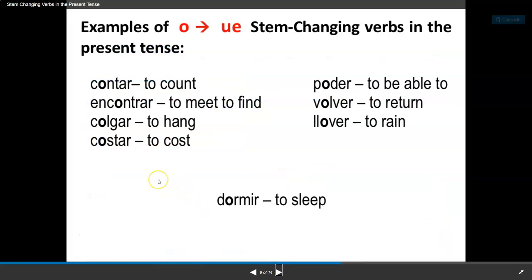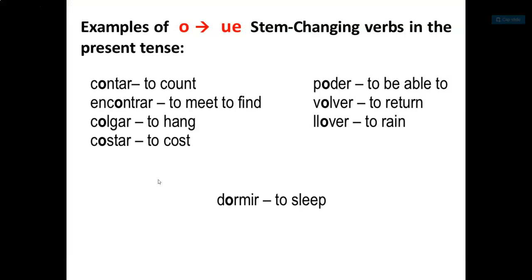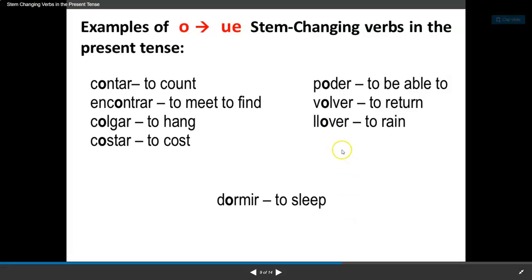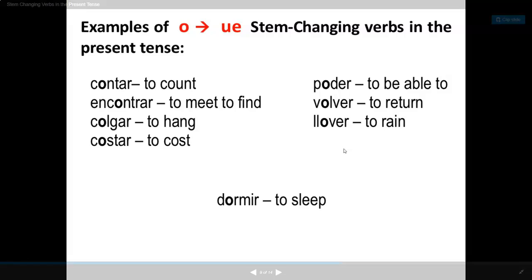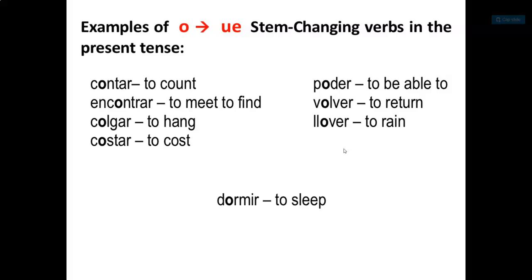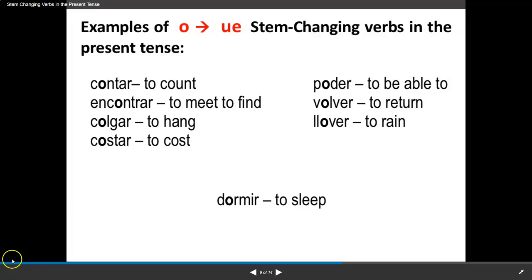Here are some more examples of verbs with the O to UE stem change: contar — to count; encontrar — to meet or to find; colgar — to hang; costar — to cost; poder — to be able to; volver — to return; llover — to rain; and dormir — to sleep.